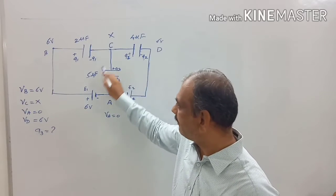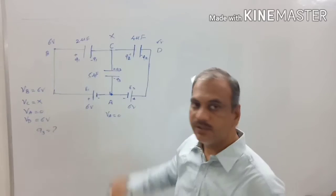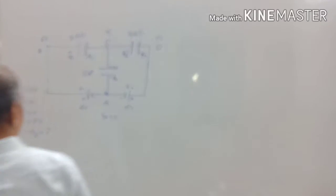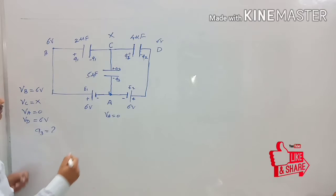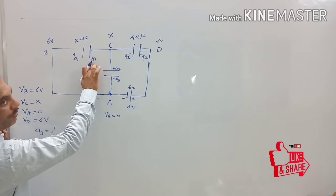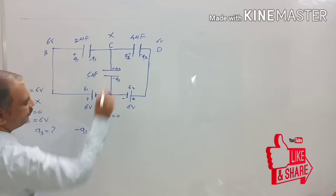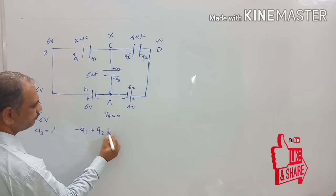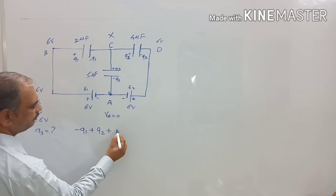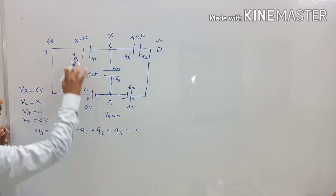We want to find the value of charge on condenser plates of the third condenser. For this diagram, we have to solve from the addition of charge. So here, minus Q1 plus Q2 plus Q3 equals to 0.